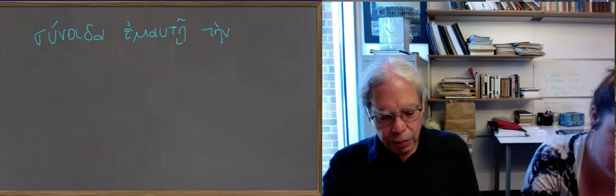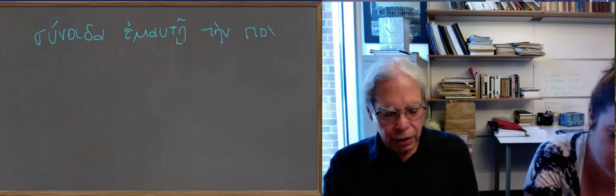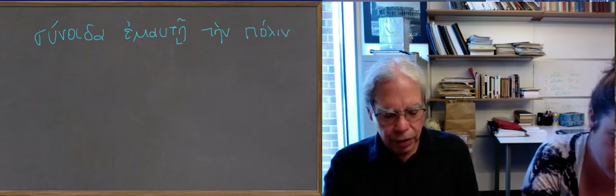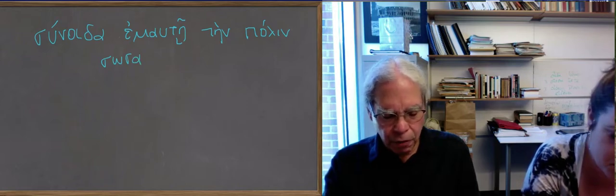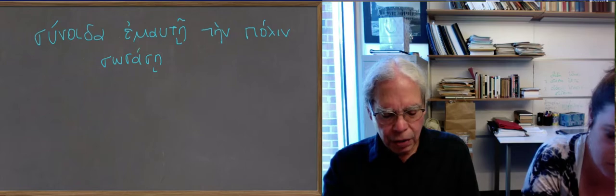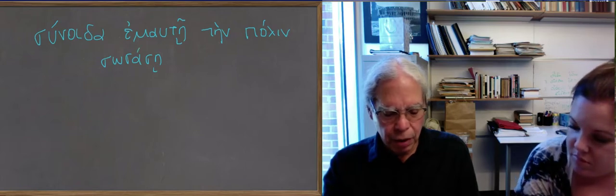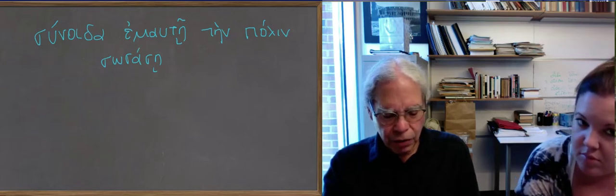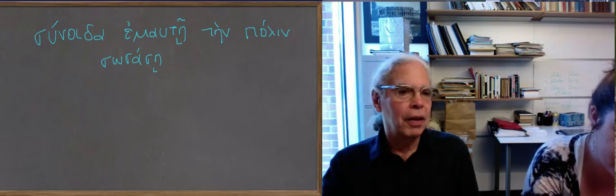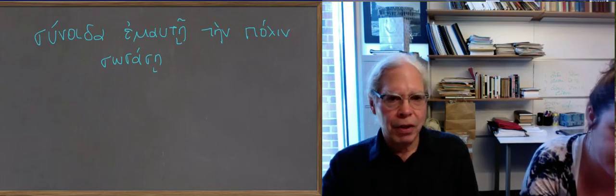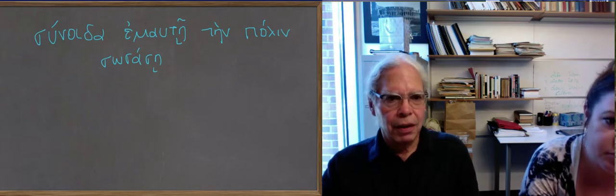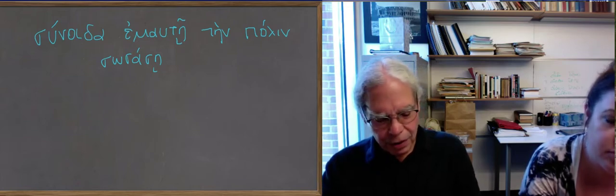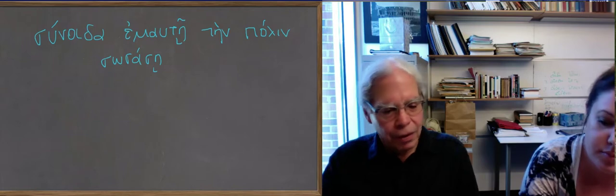So this word means to be aware of, and it governs a reflexive object in the dative case. I, this is a woman speaking, I am aware of myself, and then it takes a supplementary participle. I am aware of myself saving the city-state. A very strange kind of expression, but a really typically Greek one. I know that I saved the city-state, is what you're saying.